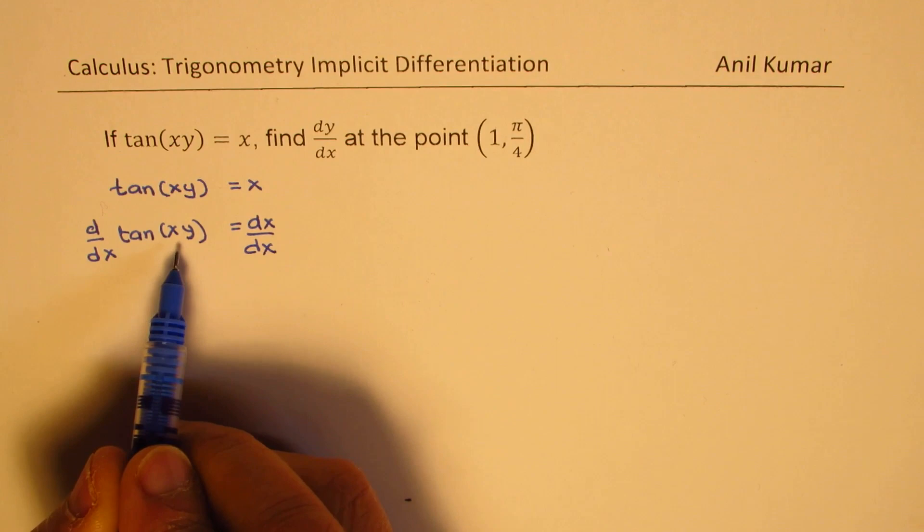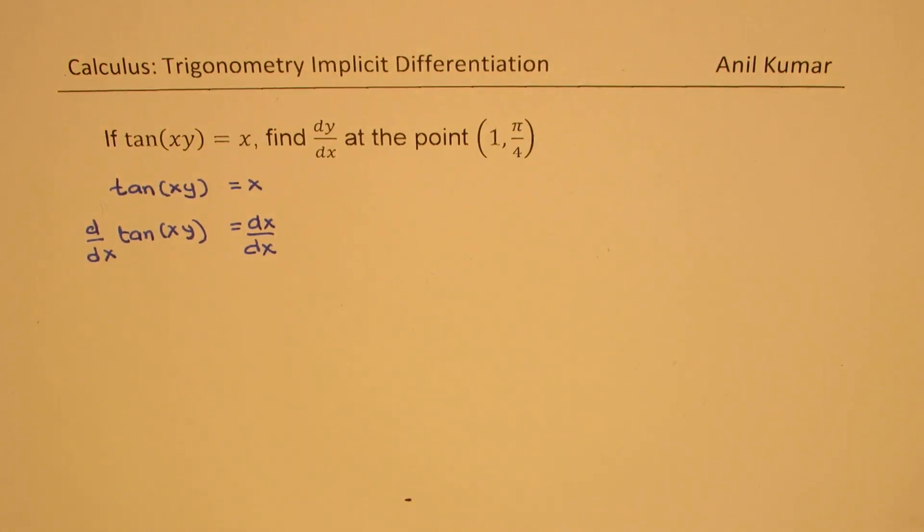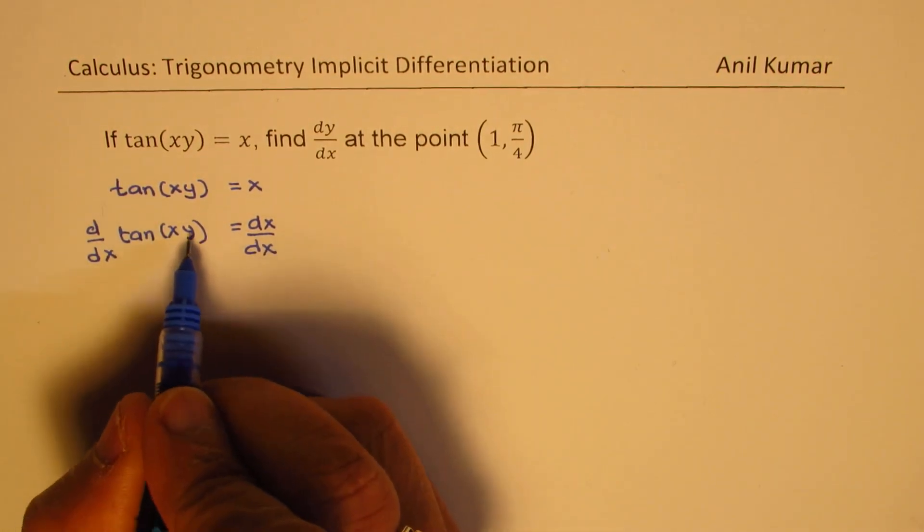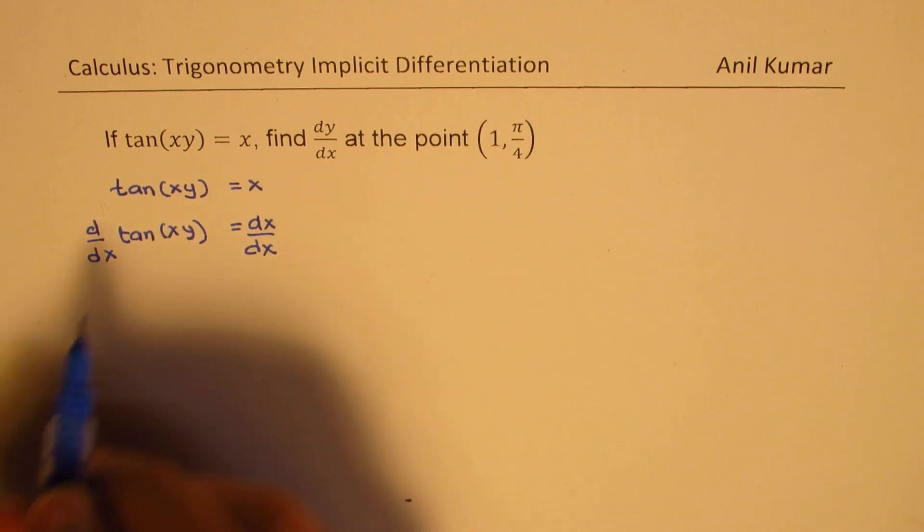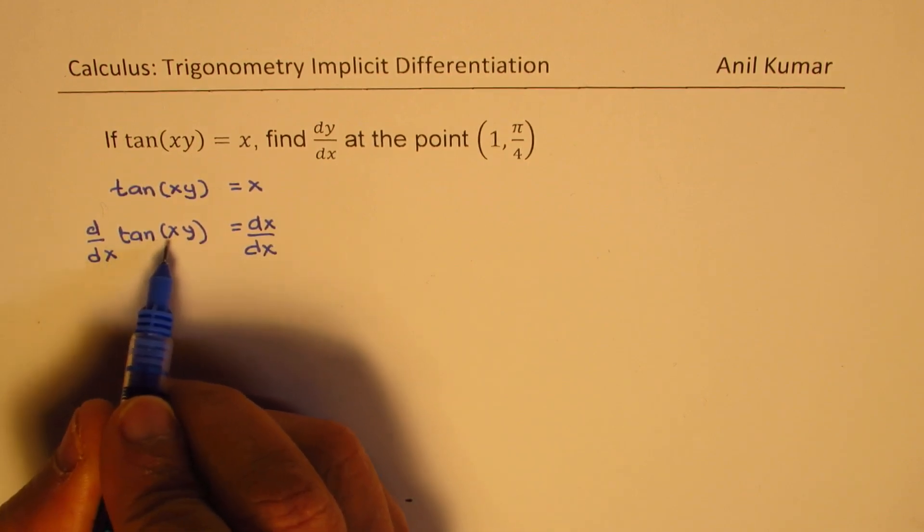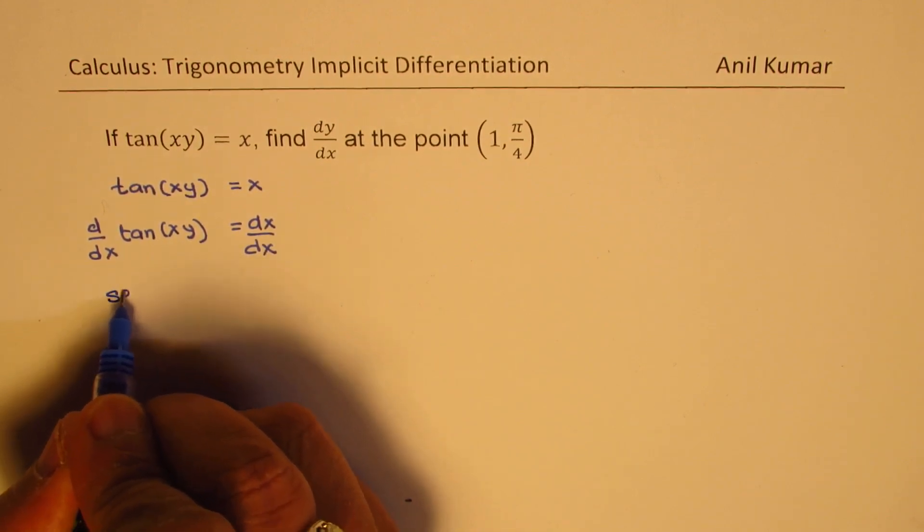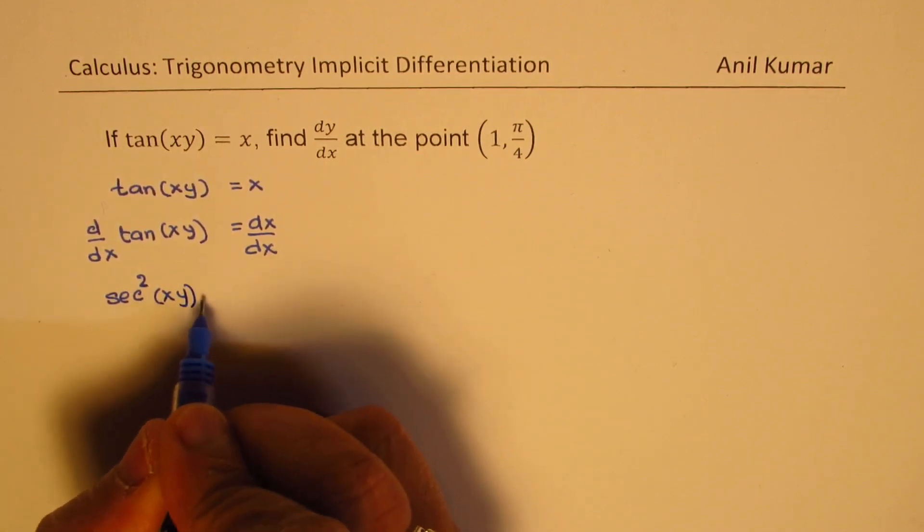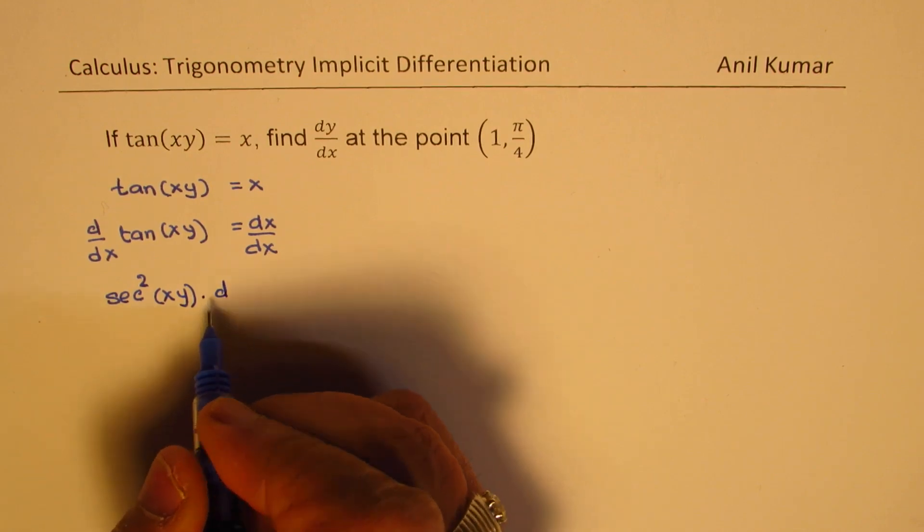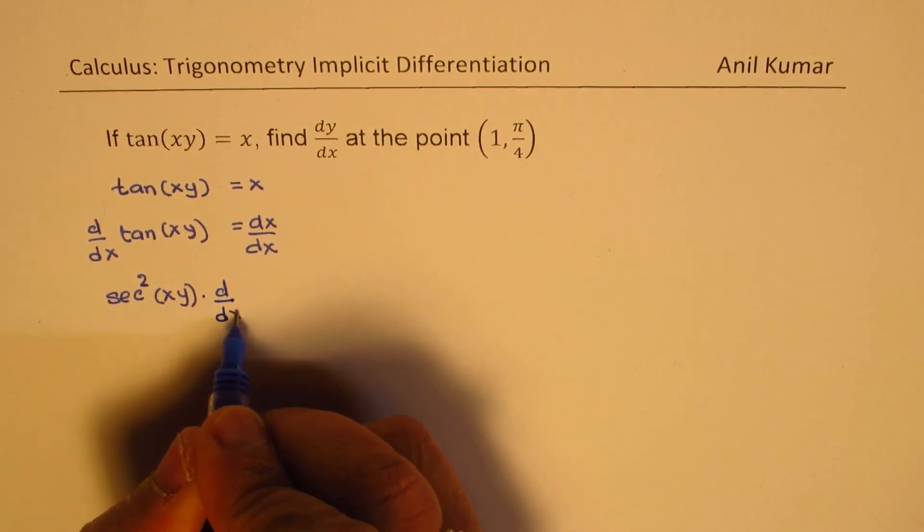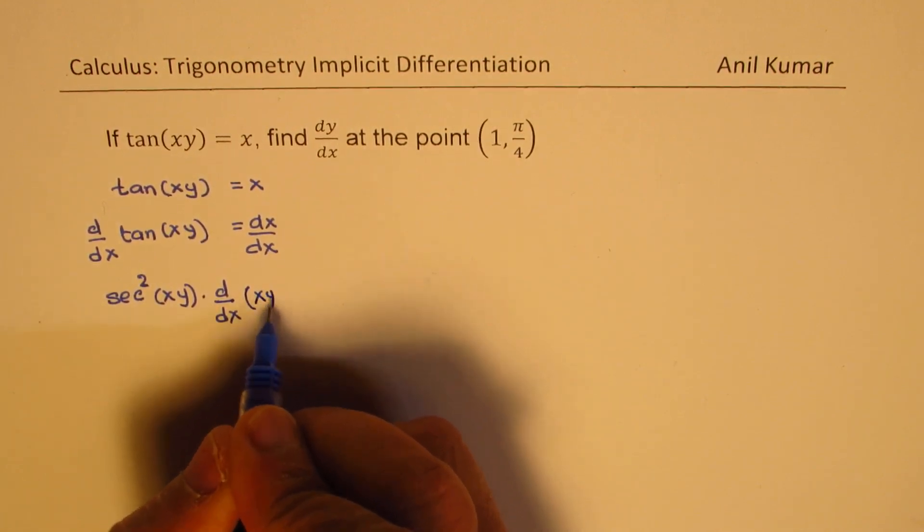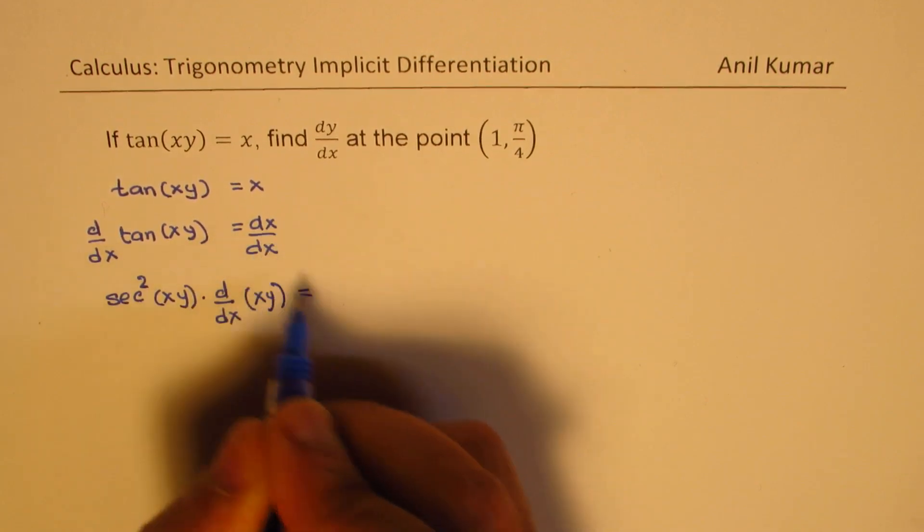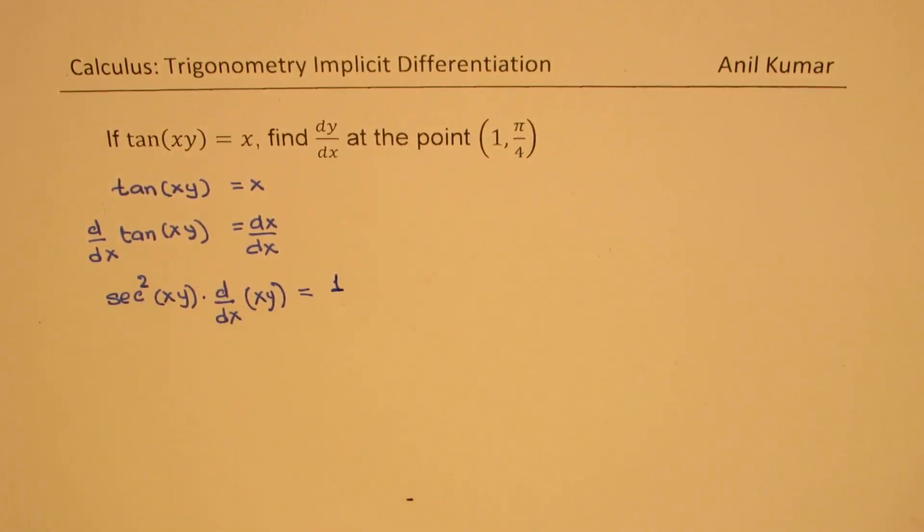Well, we have to perform the product rule for the derivative of xy. Derivative of tan(xy) is sec²(xy). Then we have d/dx of xy, and on the right side, we get 1, derivative of x.